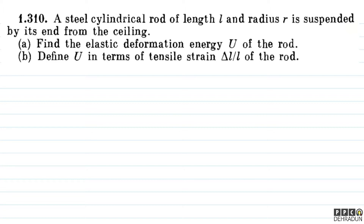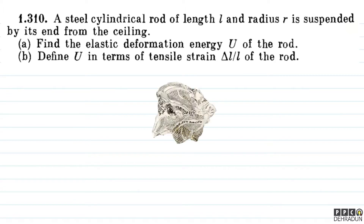The question says: a steel cylindrical rod of length L and radius R is suspended by its end from the ceiling. There are two parts. First part: find the elastic deformation energy U of the rod. Second part: define U in terms of tensile strain delta L upon L of the rod.